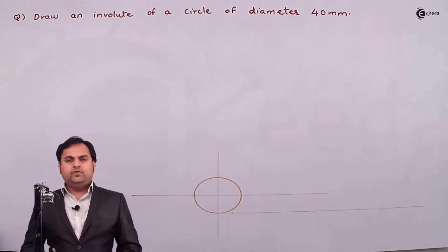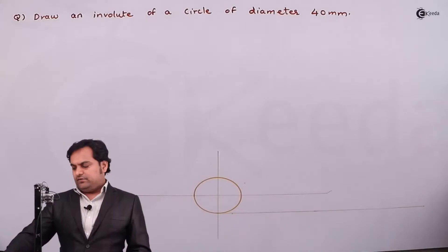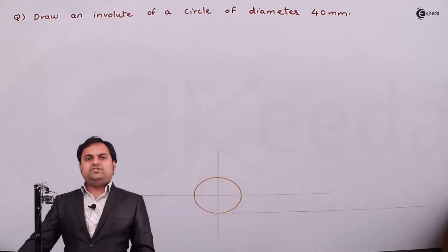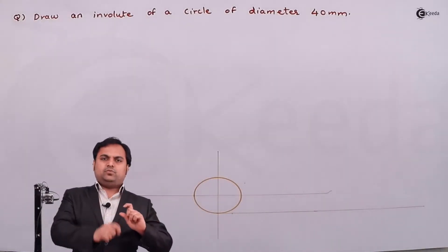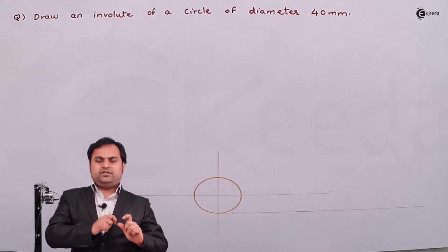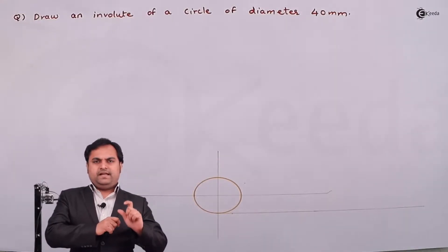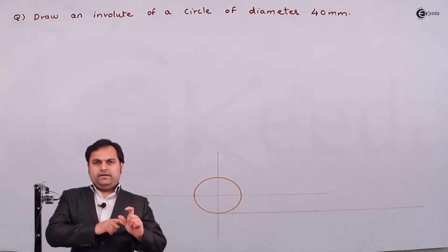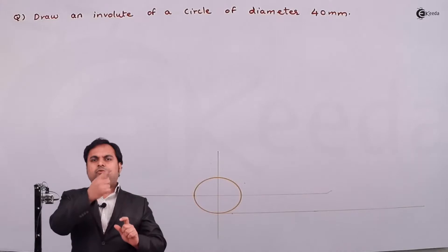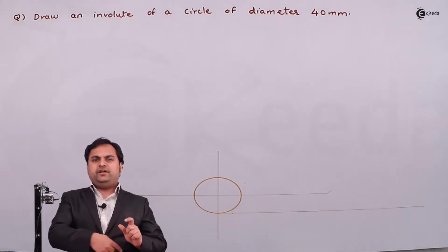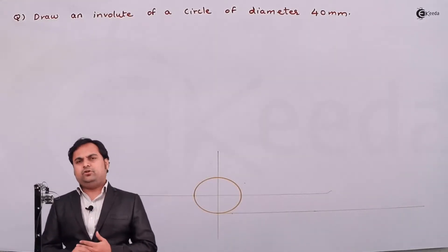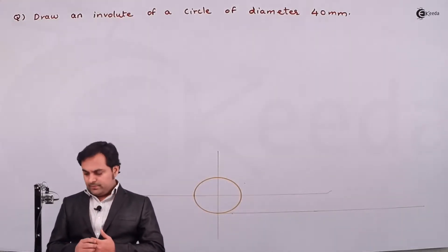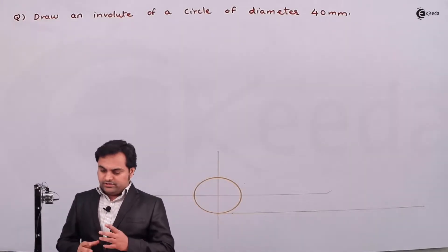An involute is the curve which is generated when a string is wound over a circle, and then when we start unwinding that string, the curve which is generated is called the involute.